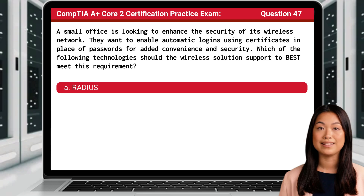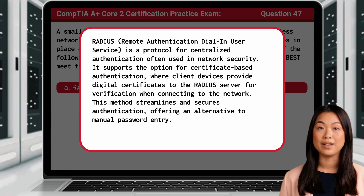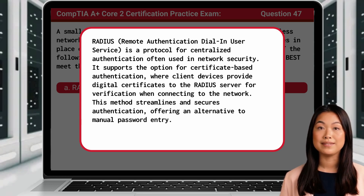The answer is A. RADIUS. RADIUS, or Remote Authentication Dial-In User Service, is a protocol for centralized authentication often used in network security. It supports the option for certificate-based authentication, where client devices provide digital certificates to the RADIUS server for verification when connecting to the network. This method streamlines and secures authentication, offering an alternative to manual password entry.